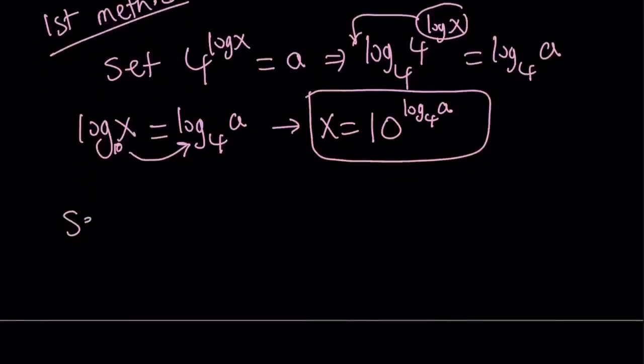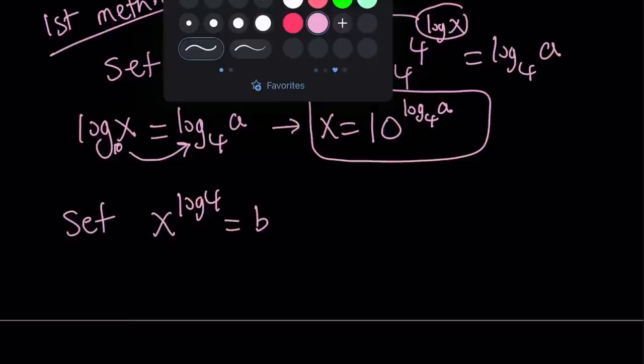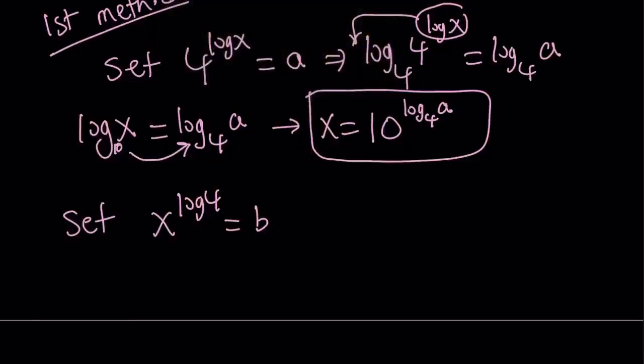Now we're going to set the other one, which is x^(log 4), equal to b. And from here, finding x is fairly easy because x is the base. In the other case, it was in the log and in the exponent. But this time it's easy. You just need to raise both sides to the power 1 over log 4. That's what you got to do.